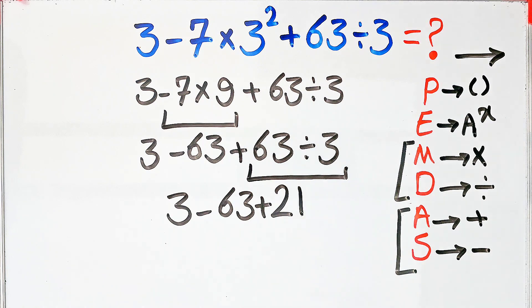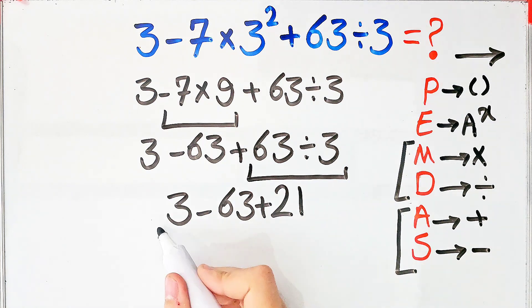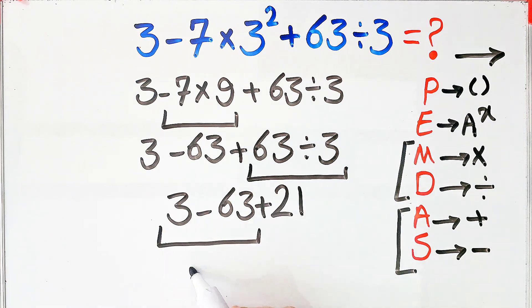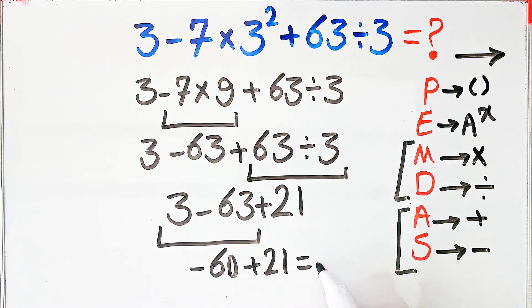3 minus 63 equals negative 60. And negative 60 plus 21 equals negative 39. The final answer of this question equals negative 39.